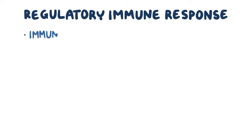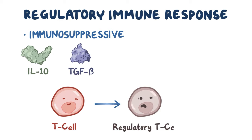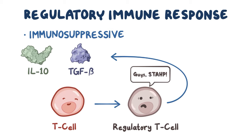The regulatory immune response is immunosuppressive. In this case, we use one cytokine from an inflammatory response, interleukin-10, along with transforming growth factor beta. The overall effect is to inhibit the inflammatory response by getting T cells to develop into regulatory T cells. Regulatory T cells produce more interleukin-10 and transforming growth factor beta, which perpetuates the anti-inflammatory state. The key is that interleukin-10 and transforming growth factor beta make nearby cells reduce their expression of co-stimulatory receptors, and ultimately that inhibits immune cell growth.